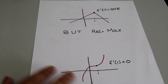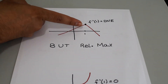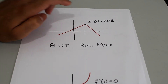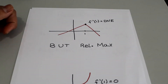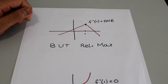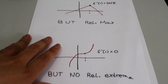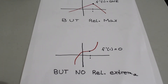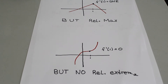In the first example, f'(1) is undefined because there is a sharp point at x = 1. However, since the function goes from increasing to decreasing, the first derivative changes signs from positive to negative, so there is a relative maximum at that point. In the second example, f'(1) = 0 but there is no relative extrema because the function is increasing on both sides — no sign change occurs.